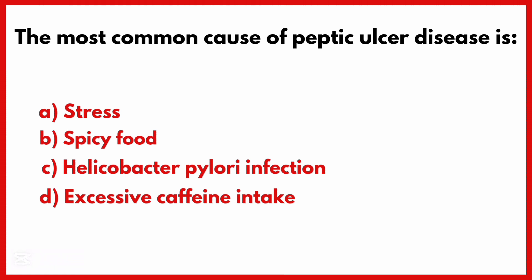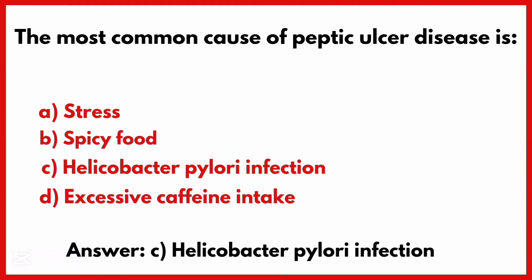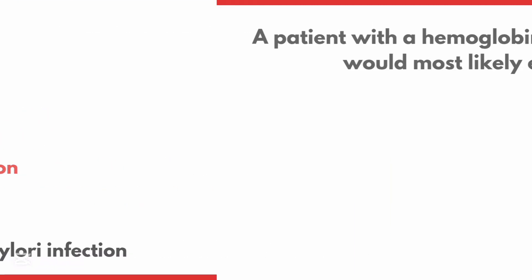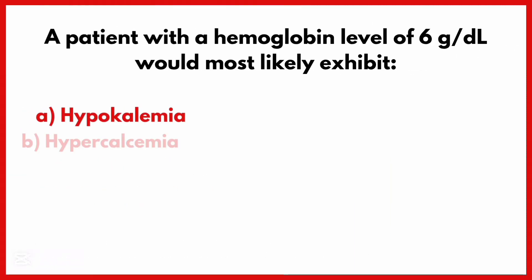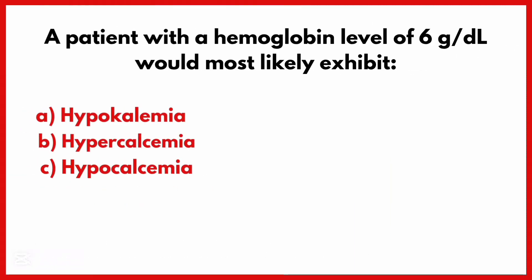The most common cause of peptic ulcer disease is — the correct answer is option C: Helicobacter pylori infection.